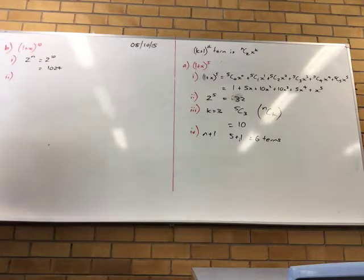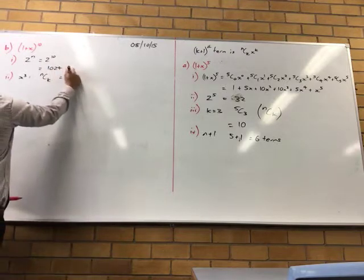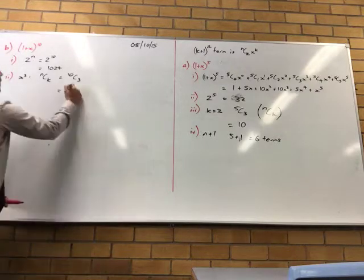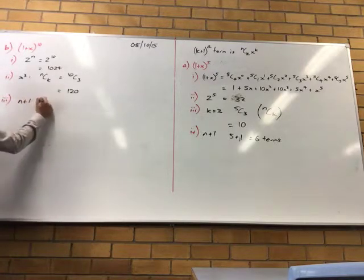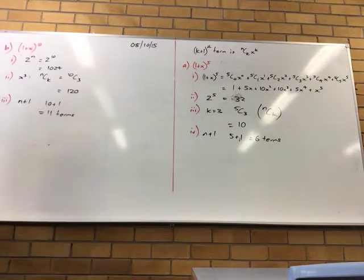What's the coefficient of x³? Instead of doing the expansion, we need to find the coefficient of x³. So nCk, so 10C3 = 120. Well, I guess so, because if the fourth term is 120, I'm guessing it's all going to add up pretty quick to 1024. Because you have 11 terms you need to work out. Oh look at that, I've just told you the answer for part 3. How many terms? 11. n+1 = 10+1 = 11 terms.